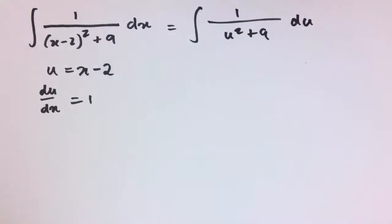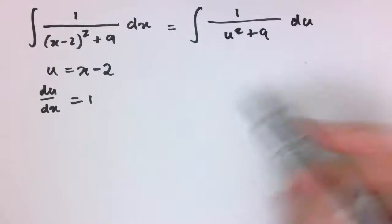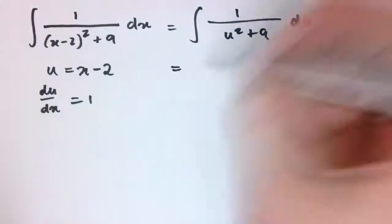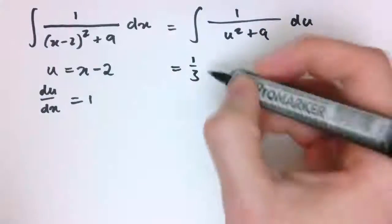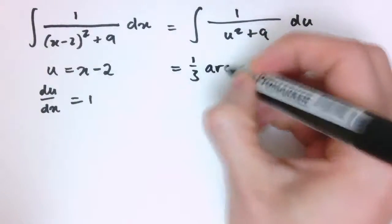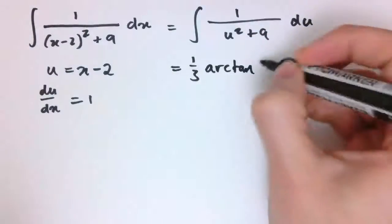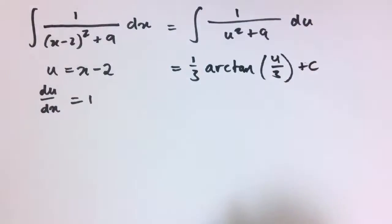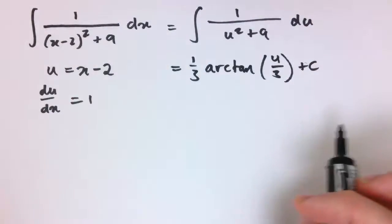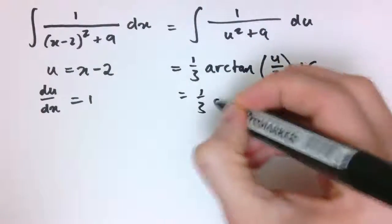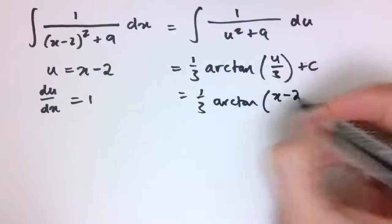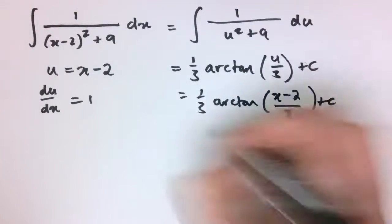Which is then exactly in the form of the previous example, or you could make a further substitution, u equals 3 times v or something, but we can just know this is exactly the same form as the previous example we just had, so this is 1 over 3 arctan u over 3 plus c, but I'd really like the answer back into x, so I get 1 third arctan, and u is x minus 2, so that's x minus 2 over 3 plus c.